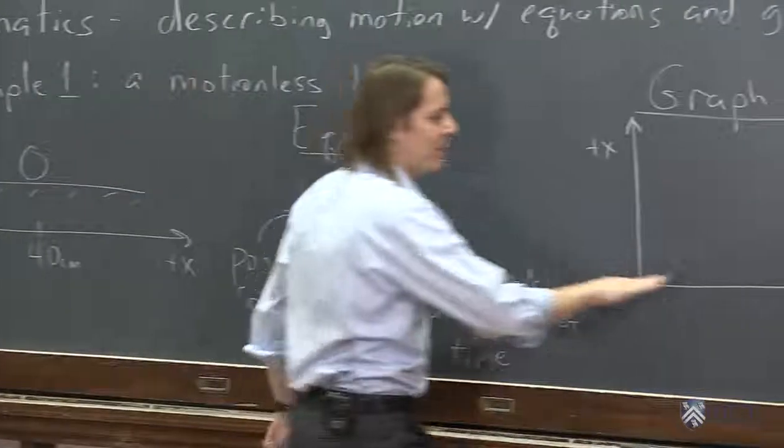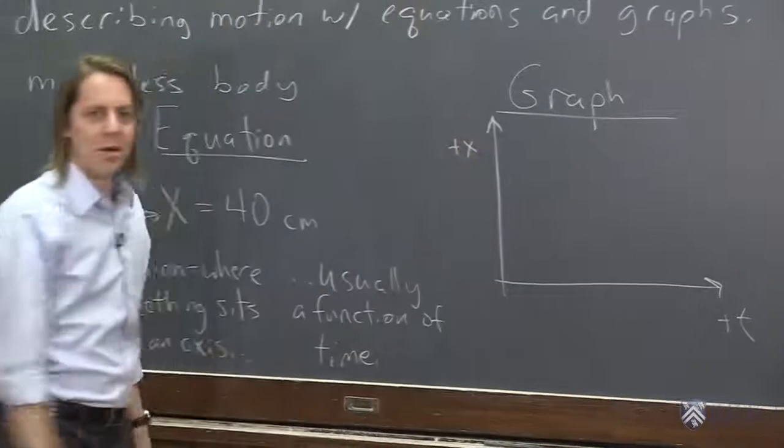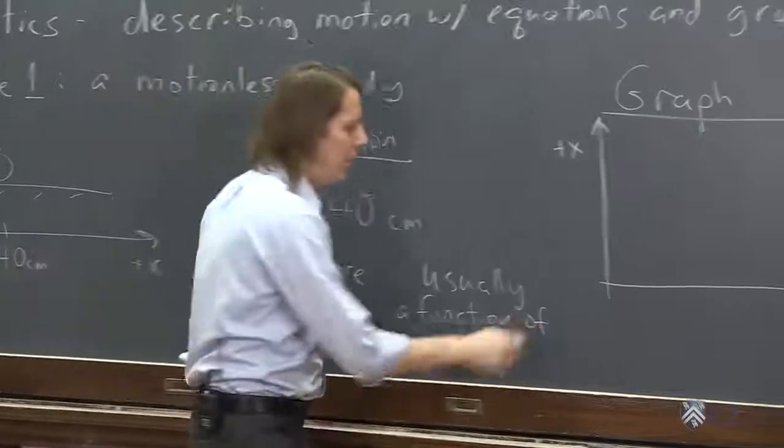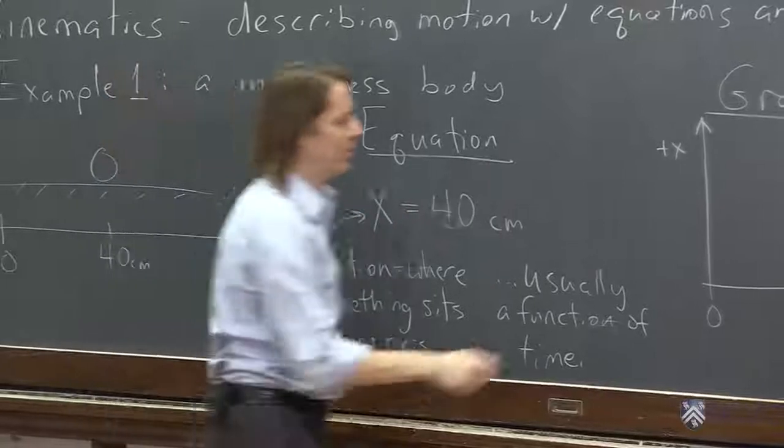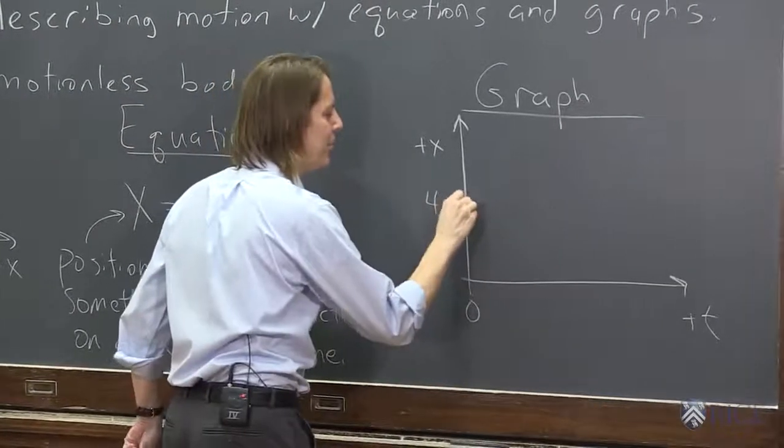In kinematics, we always have time on the horizontal axis. Basically, we are telling the story of the body. What happened to the body in time? We'll put the origin here. At time equals zero, where was the body? It was at 40 centimeters. So we'll put a plot here at 40 and put a point there.